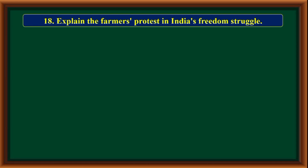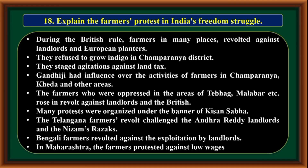Explain farmers' protests in India's freedom struggle. During British rule, farmers in many places revolted against landlords and European planters. They refused to grow indigo in Champaran district. They staged agitations against land tax. Gandhiji had influence over the activities of farmers in Champaran, Kheda, and other areas. Farmers oppressed in the areas of Tebhaga, Malabar, etc. rose in revolt against landlords and the British. Many protests were organized under the banner of Kisan Sabha. The Telangana farmers challenged the Andhra Reddy landlords and the Nizam's forces. Bengali farmers revolted against exploitation by landlords. In Maharashtra, farmers protested against low wages.